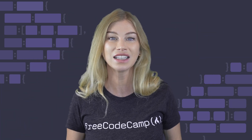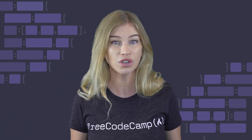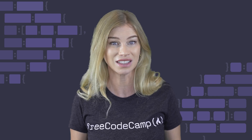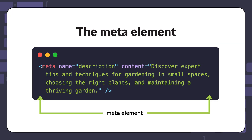One way to improve your site's SEO is to provide a short description for the web page using the meta element. Here is an example of using the meta element to set a page description for a gardening site.